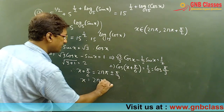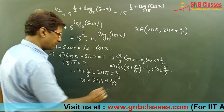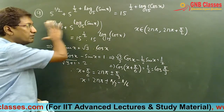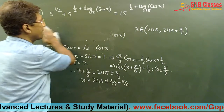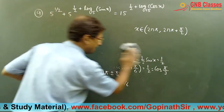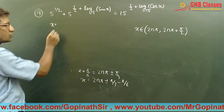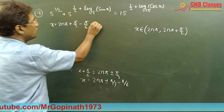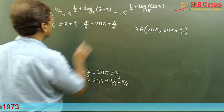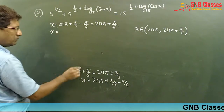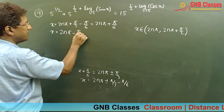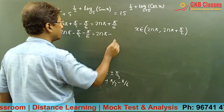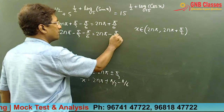So x equals 2nπ ± π/3 minus π/6. Taking the two cases separately: first case gives x = 2nπ + π/3 − π/6 = 2nπ + π/6, and the second case gives x = 2nπ − π/3 − π/6 = 2nπ − π/2.